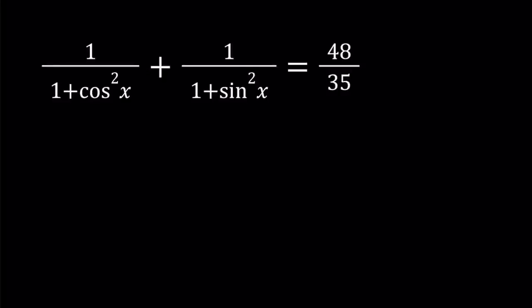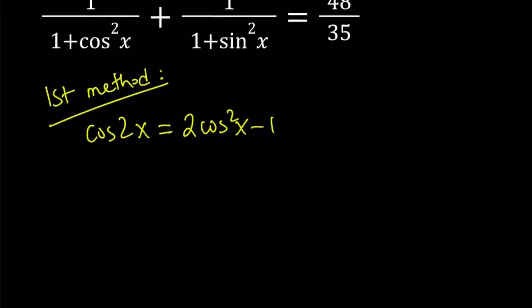I'll be presenting two methods and let's start with the first method. So for my first method, I'm going to be using the double angle formula for cosine. Remember there are three formulas for cosine 2x and I'll be using two of them. So one of them is going to be cosine 2x equals 2 cosine squared x minus 1. And from here you can basically isolate cosine squared x and write it as 1 plus cosine 2x over 2.